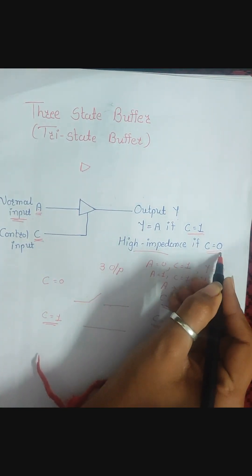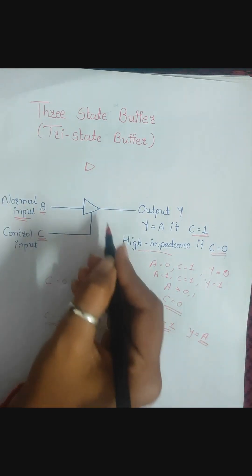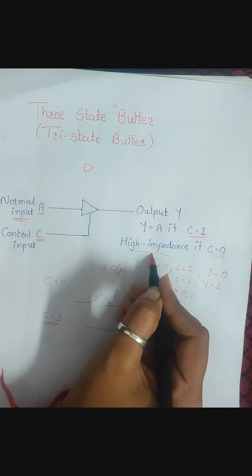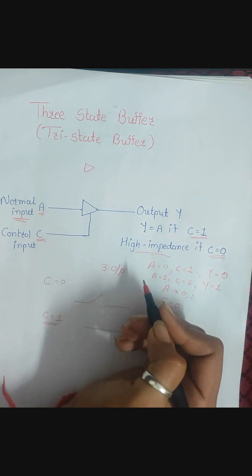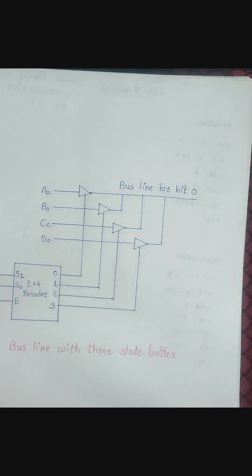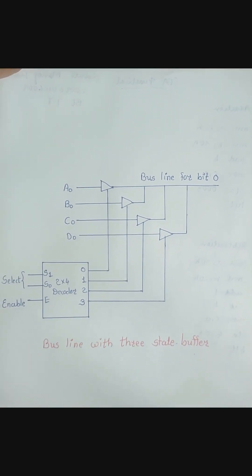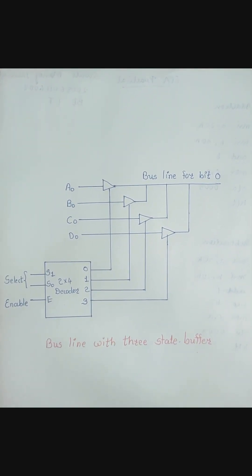If the control input C is zero, the entire circuit works as an open circuit and you get the high impedance state. This is the basic logic of a tri-state buffer. Now using this tri-state buffer we are going to create a common bus system. You have already seen a common bus system using a multiplexer — here we are going to replace that multiplexer with this circuit.